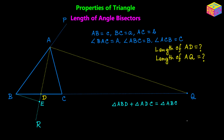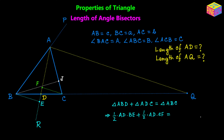The area of triangle ABD equals half times AD times BE. For triangle ADC, using AD as the base, we drop a perpendicular from C onto AD — let's call it CF — so the area of triangle ADC is half times AD times CF. For triangle ABC, using AC as the base, we drop a perpendicular from B onto AC called BJ, giving area equal to half times AC times BJ.